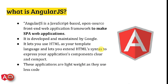What is AngularJS? AngularJS is a JavaScript-based open source front-end web application framework to make SPA web applications. SPA stands for single page application. In coming slides I'll show you what is SPA. AngularJS is a very popular framework used to develop SPA websites. It is developed and maintained by Google. It lets you use your HTML as your template language and lets you extend HTML syntax to express your application's components clearly and compactly. These applications are lightweight as they use less code.